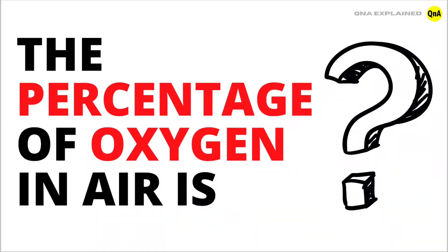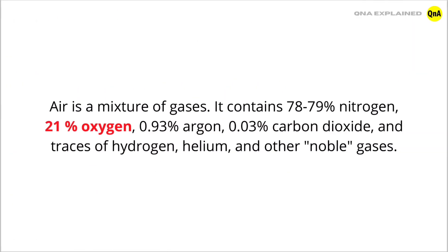In this video, we will discuss the percentage of oxygen in the air. Air is a mixture of gases. It contains 78 to 79% nitrogen and 21% oxygen.